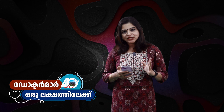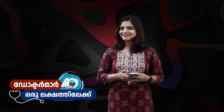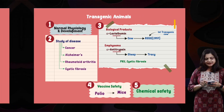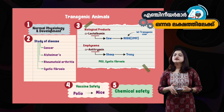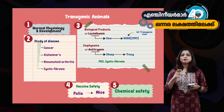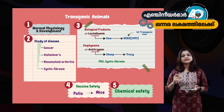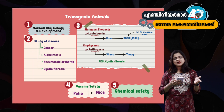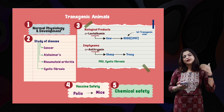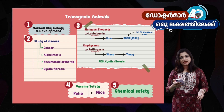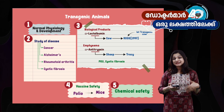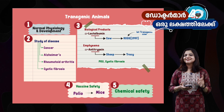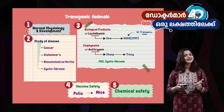This is red biotechnology. There is no vaccine production in the NCERT textbook — that is a NMC addition. The next one is transgenic animals. There are a few points for transgenic animals in the NCERT textbook. What is the disease? What is the transgenic animals? What is the biological products?